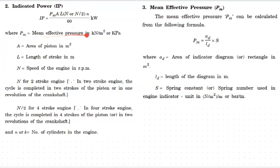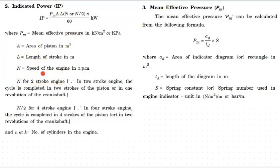PM is the mean effective pressure in kilonewtons per meter square. A is the area of the piston in meter square. L is the length of stroke in meters. N is the speed in RPM. For a two-stroke engine it is N, for a four-stroke engine it is N by two. Number of cylinders can be single cylinder or multi-cylinder.